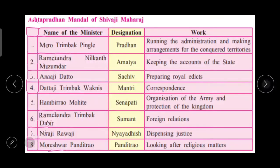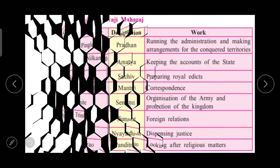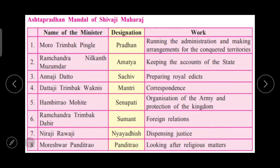Here you can see the chart from our textbook about the eight ministers — their names, designations, and work. The first is Moro Trimbak Pingle, Pradhan in the Astapradhan Mandal, whose work was running the administration and making arrangements for conquered territories. Then Ramchandra Nilkant Muzumdar, Amatya, whose work was to keep the accounts of the state.